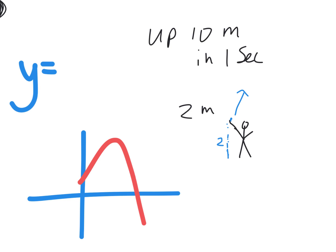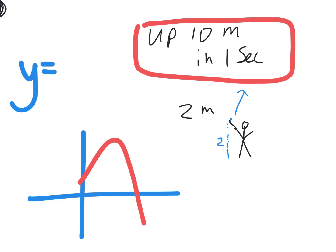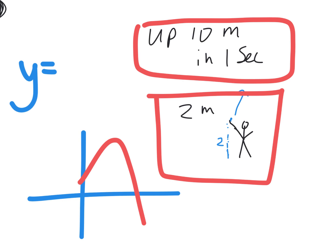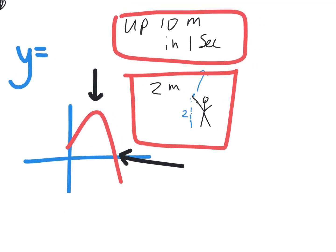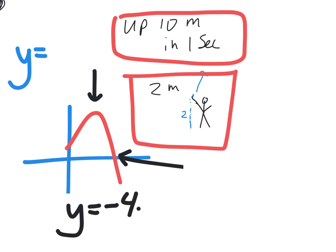The friend threw the ball up and it went up 10 meters in one second — that was just a way to get a speed. In the real world, nobody knows exactly how fast they threw the ball, but if you watched your friend you might estimate their speed. That height off the ground was 2 meters — you should be able to write the equation for that. Is anybody going to be using the quadratic formula to solve this? No — that would have been if I asked when did the ball hit the ground. Right now it's how high did it go. The equation is: y equals negative 4.9t squared plus 10t plus 2.